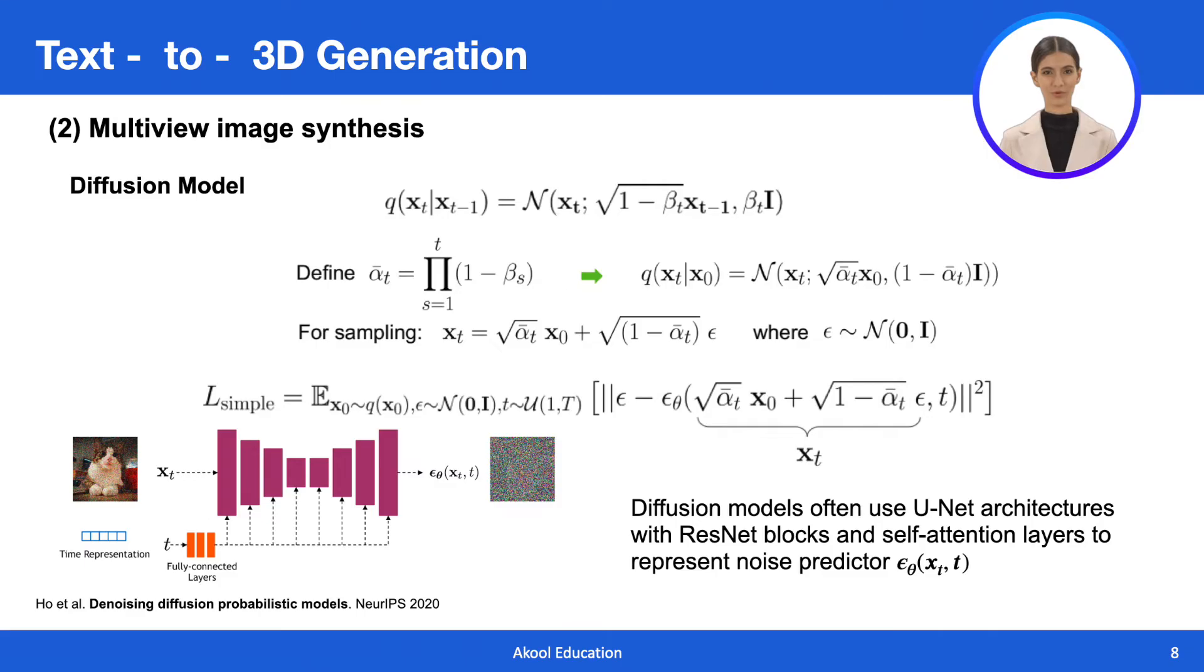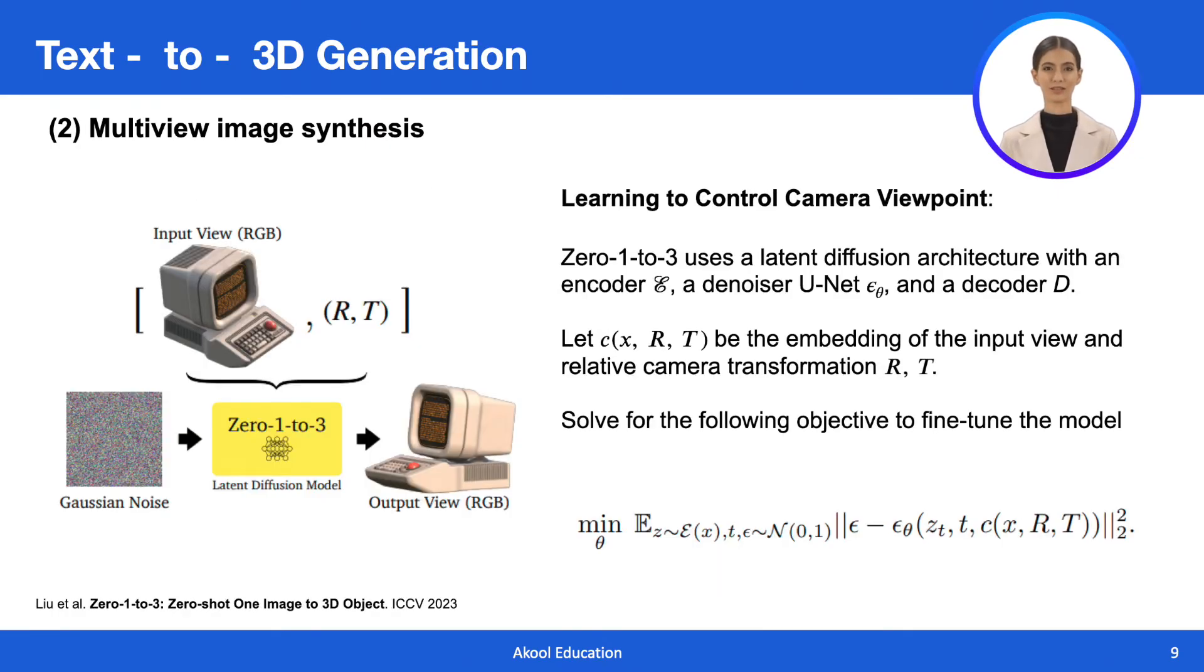In the training of diffusion models, it is common to employ a reverse process mean function approximator for predicting the additive noise. These models frequently leverage UNET architectures featuring ResNet blocks and self-attention layers to effectively represent the noise predictor. The use of such architectures enhances the model's capacity to capture complex dependencies and relationships within the data, contributing to the overall effectiveness of the diffusion process reversal.